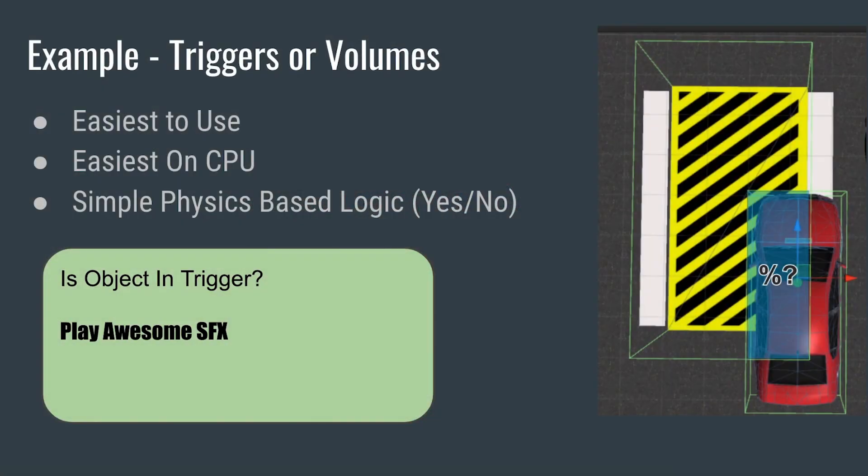This is Scott with Game Audio Institute and we are continuing our journey into audio scripting in Unity. Last time we were looking at triggers, specifically different kinds of triggers. To explain a bit of context: triggers are useful for games because they're relatively easy to use and easy on the processor — there's not really much going on in terms of processing.